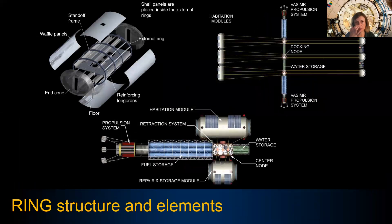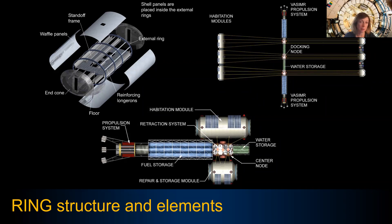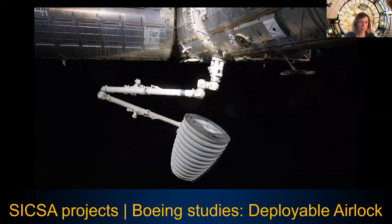Here is an example of an artificial gravity rotating environment. Everything is arranged around the core. On one side are the habitation modules, and the counterweight on the other side is repair and storage modules. Everything is assembled together, and once in flight those modules expand from the core on tethers, and the core starts rotating, providing artificial gravity conditions.